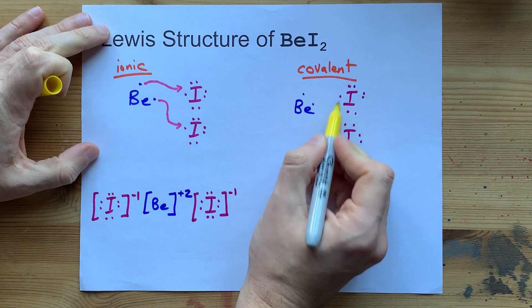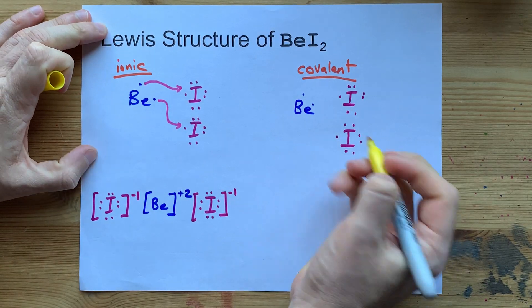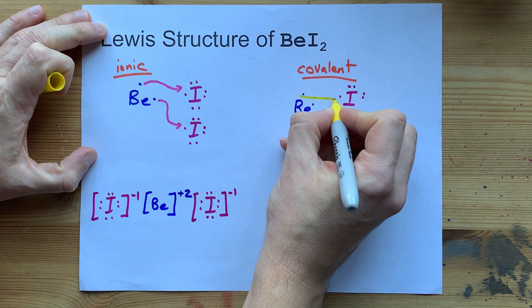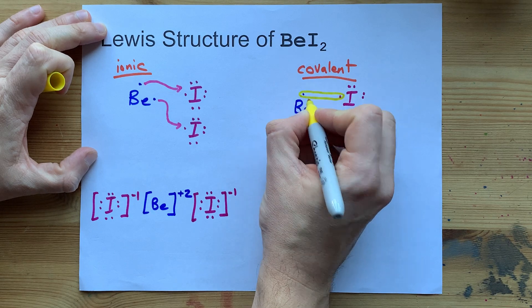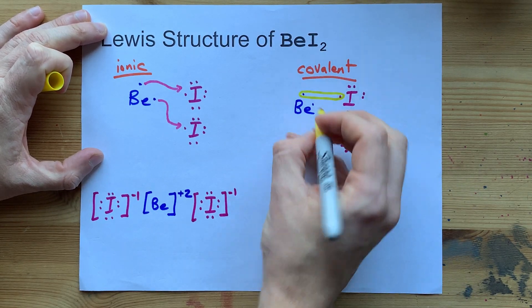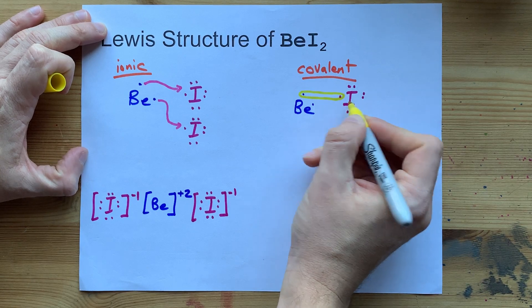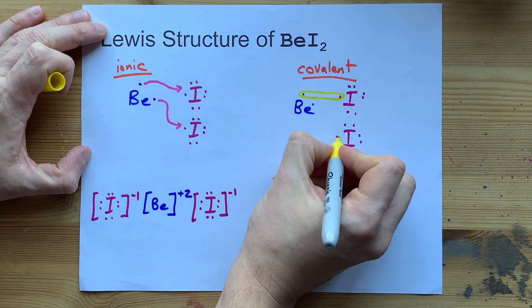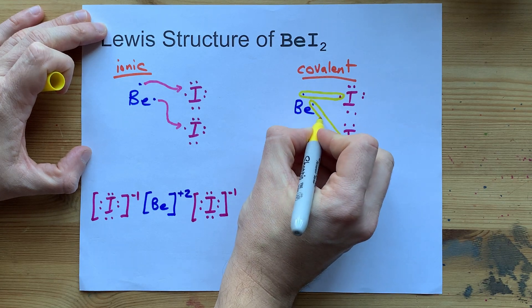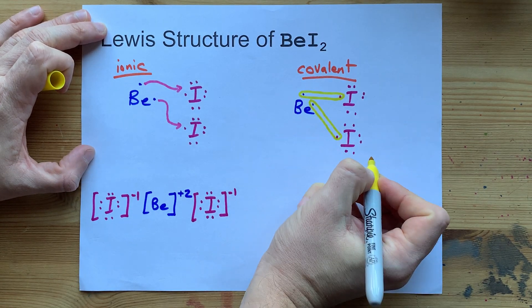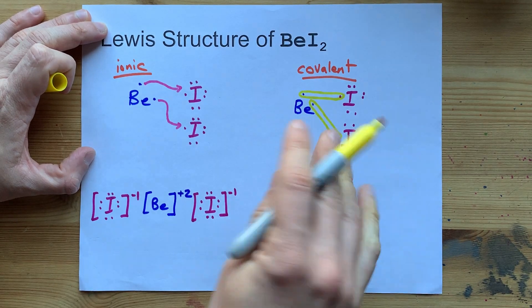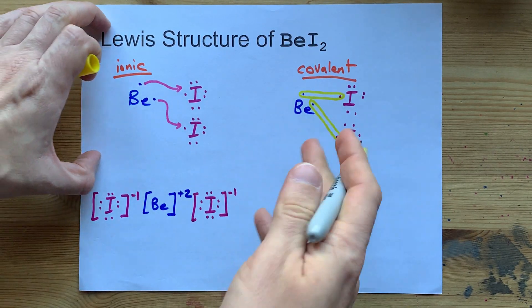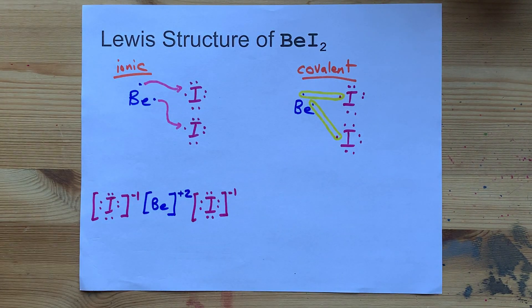This iodine has 7 valence electrons, and if these 2 electrons pair up and spend most of their time in between the 2 atoms as a bonding pair, iodine can pretend that it has the full 8. This iodine can pretend if these 2 electrons pair up with each other, and beryllium is happy with just 4 valence electrons, it's actually an exception to the octet rule.